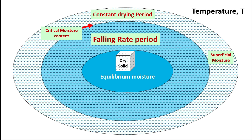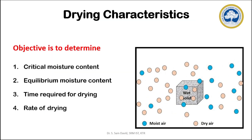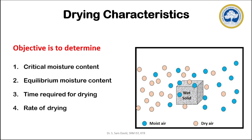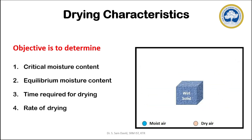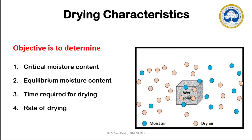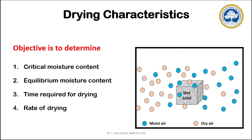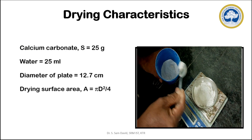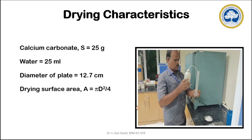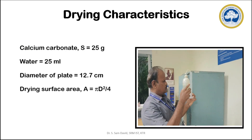In a drying experiment, the objectives are to determine the critical moisture content, equilibrium moisture content, time required for drying, and the rate of drying. To perform this experiment, 25 grams of calcium carbonate will be mixed with 25 mL of water.